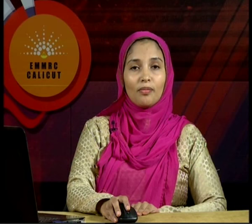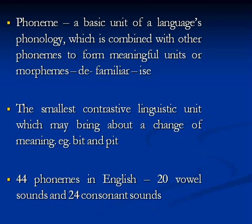Let us see what is a phoneme. A phoneme is a basic unit of a language's phonology which is combined with other phonemes to form meaningful units or morphemes. For example, 'D', 'familiarize', 'eyes' — each is a morpheme made up of phonemes. A phoneme can be defined as the smallest contrastive linguistic unit which may bring about a change of meaning. For example, 'bit' and 'pit' — the difference between the two words is 'b' and 'p', which brings about a change of meaning. We have 44 phonemes in English: 20 vowel sounds and 24 consonant sounds.